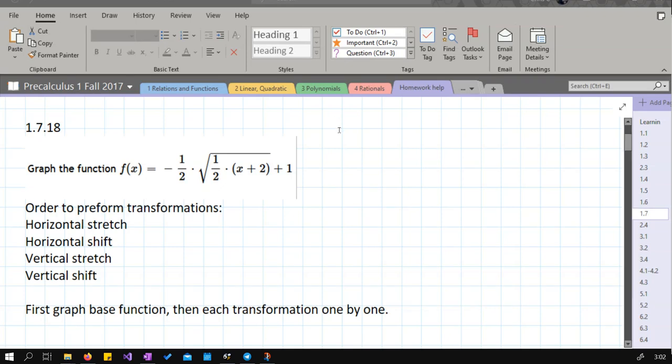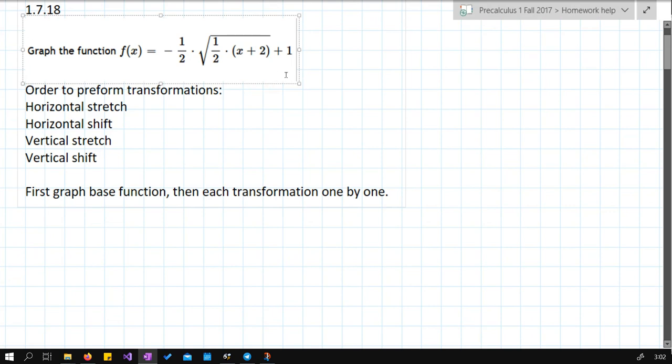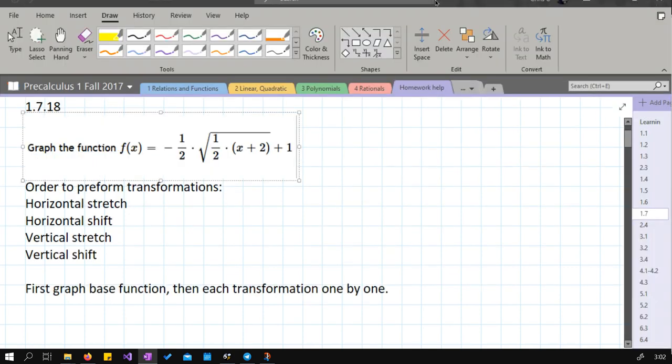We're going to graph this function using transformations, and what we're going to do is perform them in the order written here. Before we do that, we have to start with the base function. Now, let's go ahead and write all the transformations that are happening here. First I'll start by highlighting them.